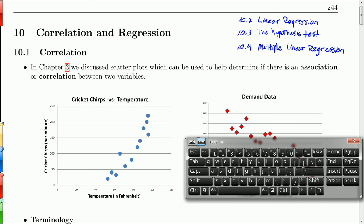Hello, and welcome to Chapter 10 from Stevens' Introduction to Statistics, the Think and Do book. In this chapter, we're going to talk about correlation and regression.